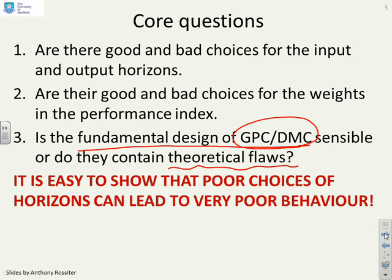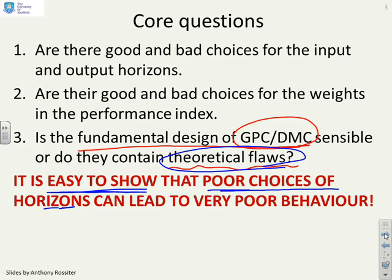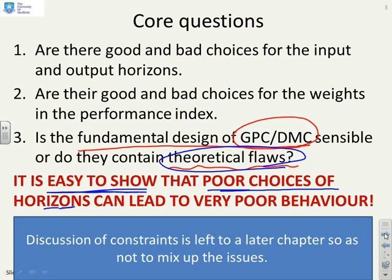Here's the key point. It's easy to show that poor choices of horizons can lead to very poor behaviour. So there are indeed some theoretical flaws if you are not careful. We're not going to look at constraints in this particular chapter, because that will confuse the issues and we'll deal with that in a later chapter.